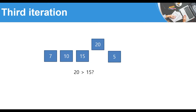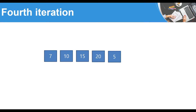For the third iteration, we start with the fourth element, which is 20. Is 20 greater than 15? Yes. Is 20 greater than 10? Yes. Is 20 greater than 7? Yes. So after the third iteration, 20 remains in the same place — no swaps needed.